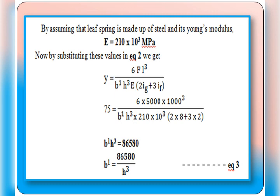Substituting into the deflection equation: 75 = 6 × 5000 × 1000³ divided by (B dash × H³ × 210 × 10³ × (2 × 8 + 3 × 2)). By simplifying, we get the product B dash × H³ = 86,580. Therefore B dash = 86,580 divided by H³. We call this equation number three.